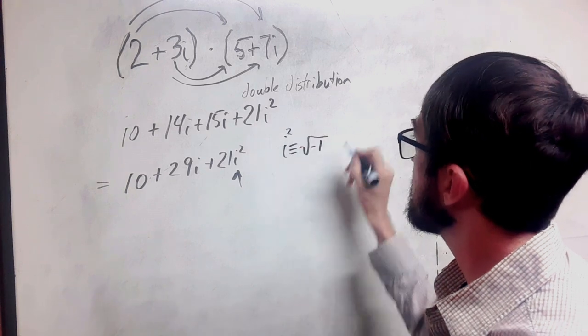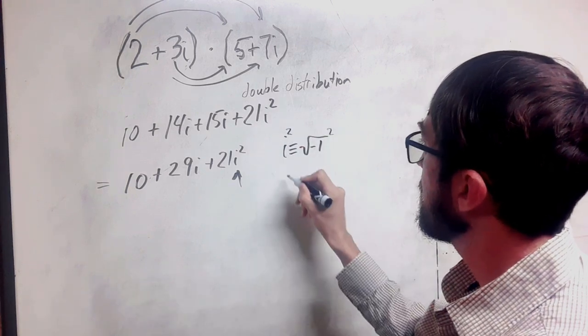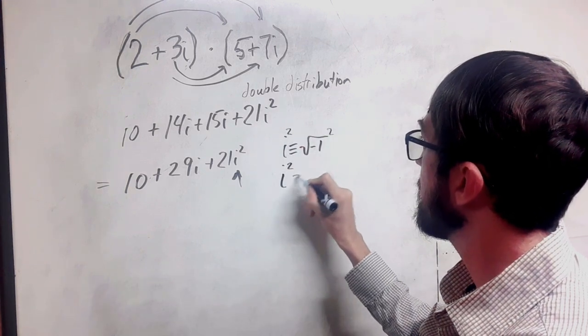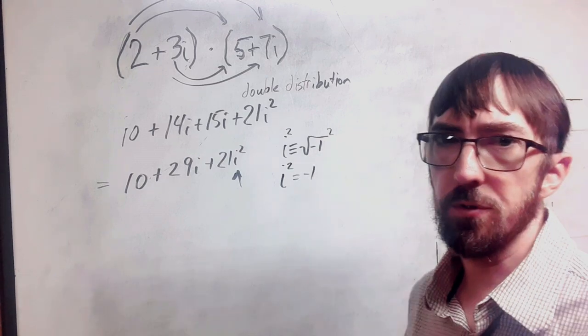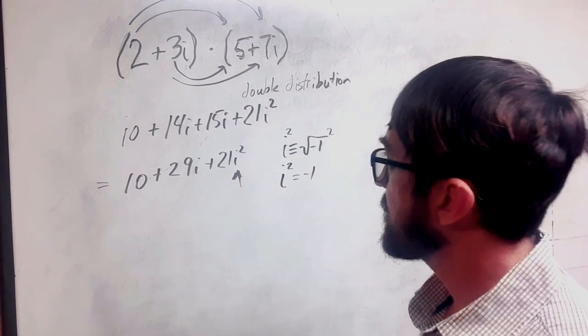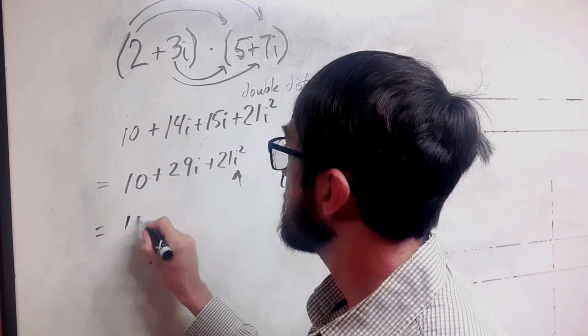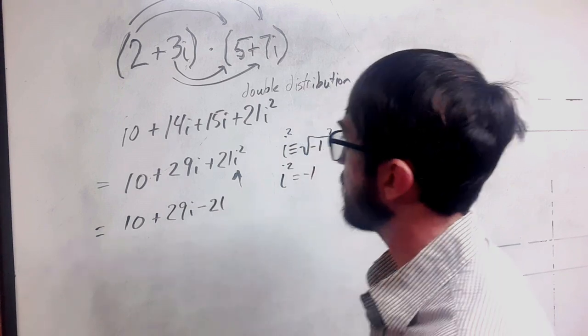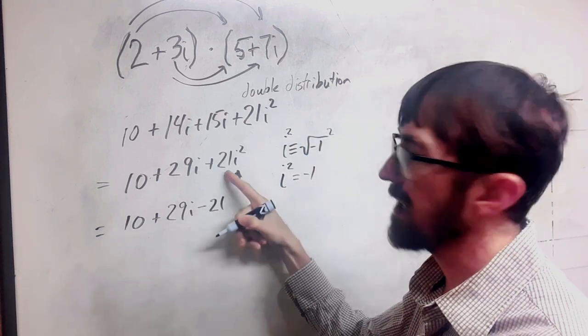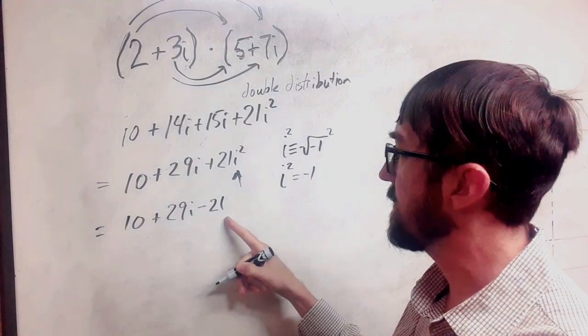If I square this, and I square this, then I get that i squared is negative 1. Because these are inverse operations. So we need to change this. So this is 10 plus 29i minus 21. Because this is negative 1 times 21, which gives us the negative 21.